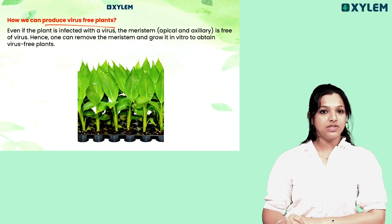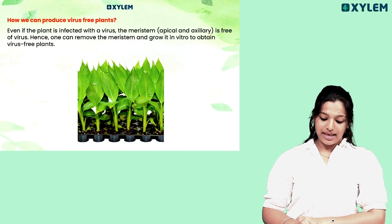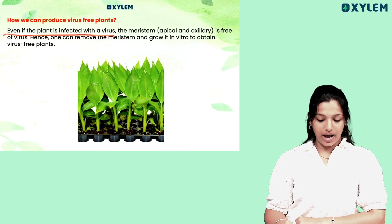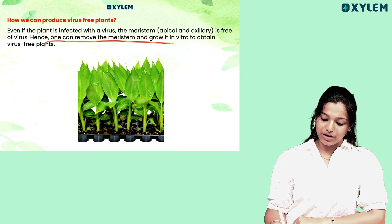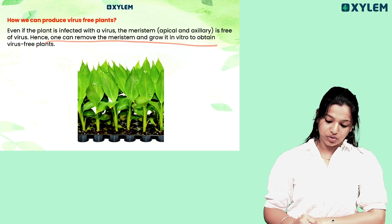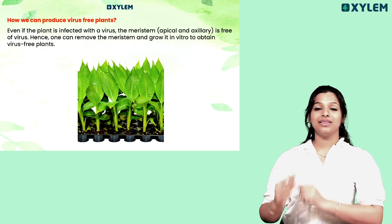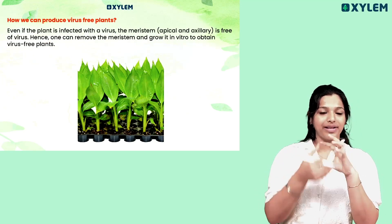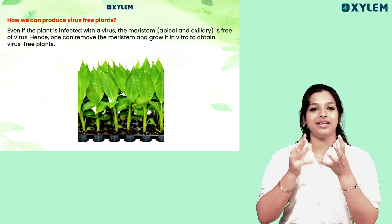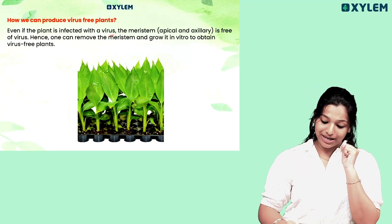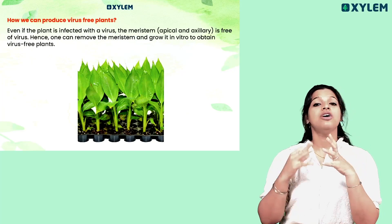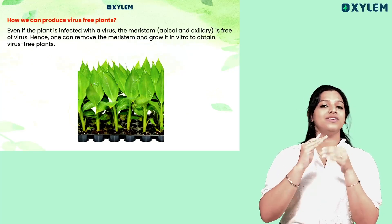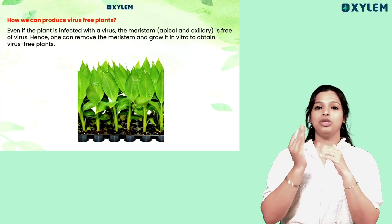How can we produce virus-free plants? Even if the plant is infected with a virus, the meristem is free of virus. Hence, one can remove the meristem and grow it in vitro to obtain virus-free plants. The apical and axillary meristem is free of virus, and that is why we use it to develop the entire plant.